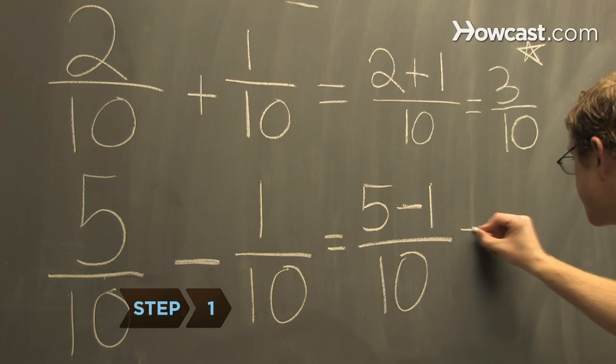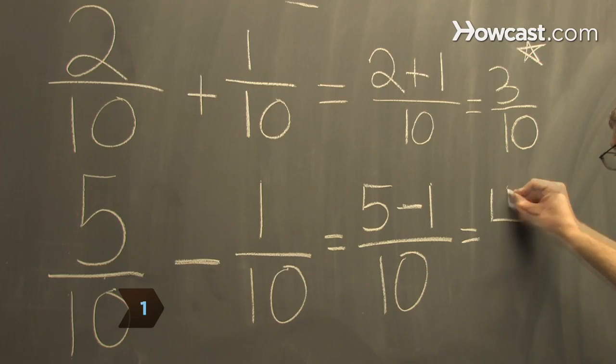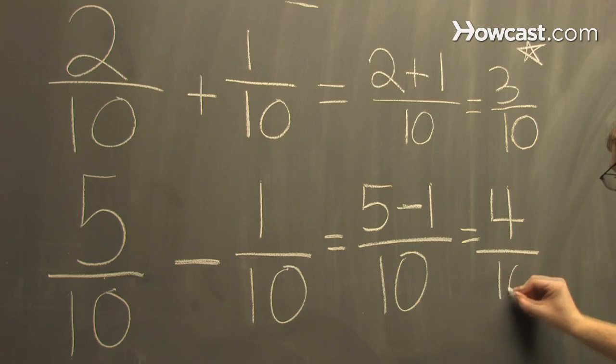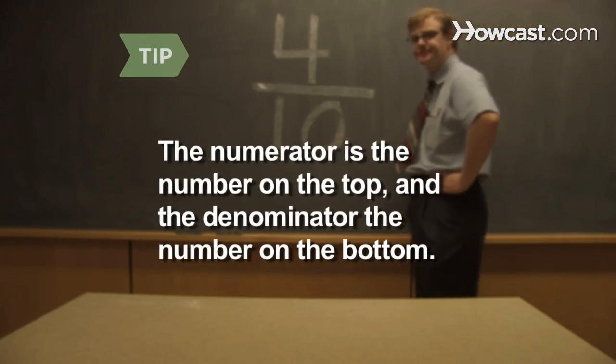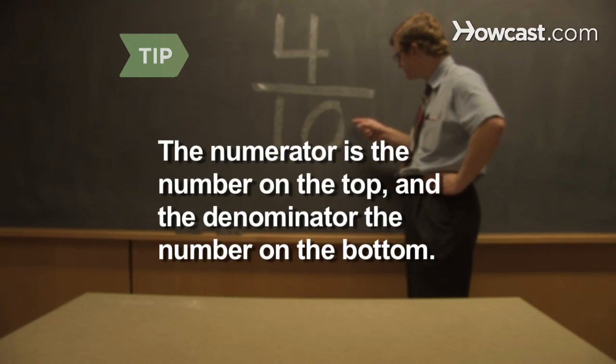Step 1. Add or subtract the numerators and keep the same denominator if the fractions have the same denominator. The numerator is the number on the top and the denominator is the number on the bottom of the fraction.